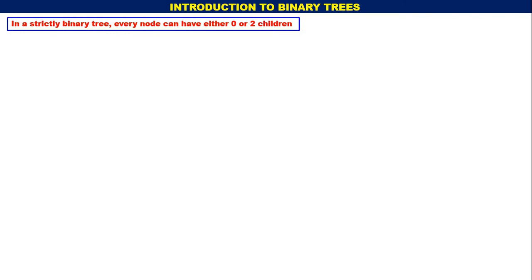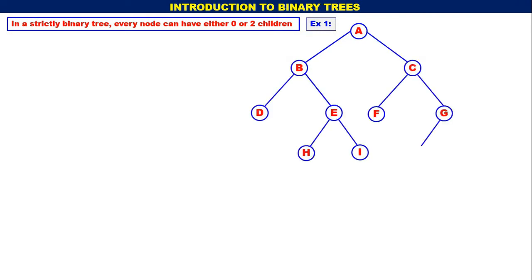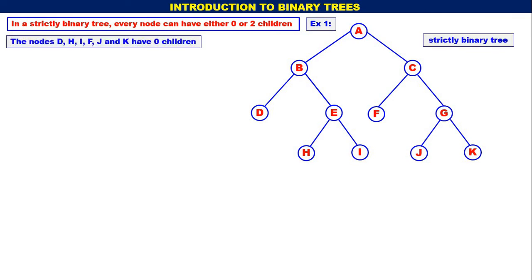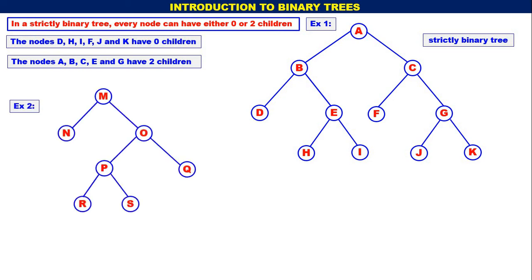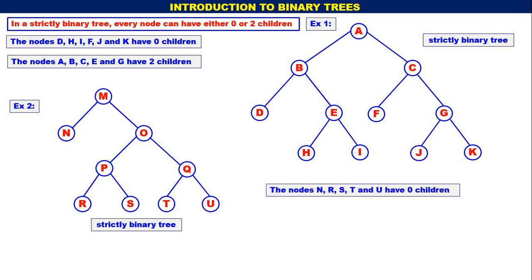In a strictly binary tree, every node can have either 0 children or 2 children — one child is not allowed. In the first example, the nodes D, H, I, F, J, and K have 0 children, whereas nodes A, B, C, E, and G have 2 children — a strictly binary tree. In the second example, nodes N, R, S, T, and U have 0 children, whereas nodes M, O, P, and Q have 2 children. Strictly binary tree: either 0 children or 2 children.